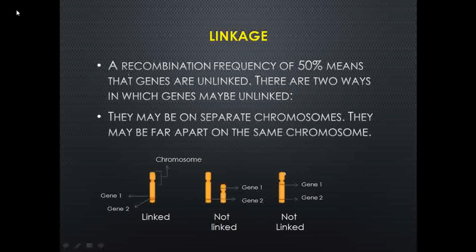This diagram shows whether genes are linked or not. On the first chromosome, gene one and gene two are present very close to each other on the same chromosome — we can say these genes are linked. This represents a complete type of linkage.